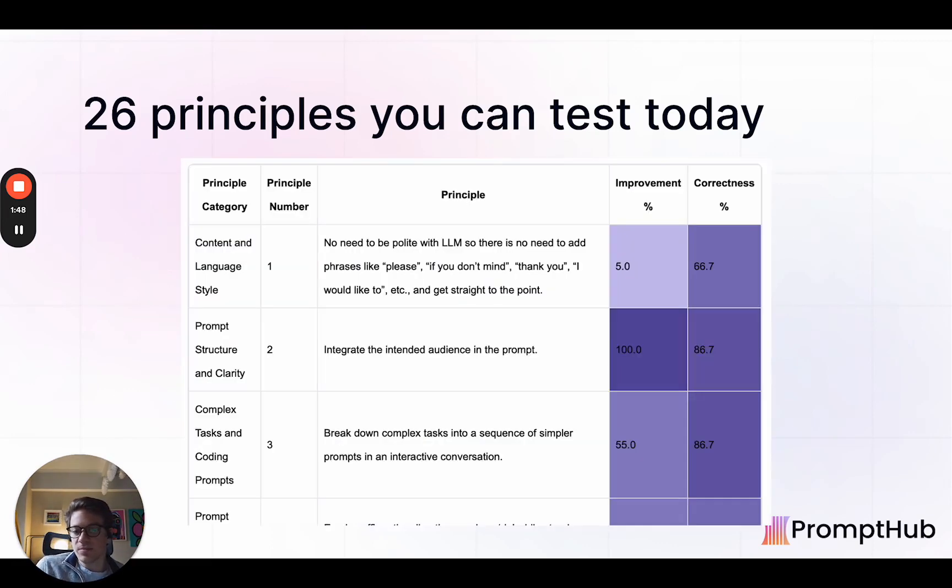And so that list that we looked at before, it's directly in the research paper, it's 26 principles. And then they later on go to show you how much each principle affected the baseline prompt. And what we did is we combined those into a single table with the category, the principle, and the improvement and correctness percentage increases. And so that's available via our Substack. So if you just drop your email in, you'll get the link to a Google sheet that has all that for GPT-3.5 and GPT-4. So it's broken down by model to account for the different percentage increases that they found through the experiments. So that's free to access.